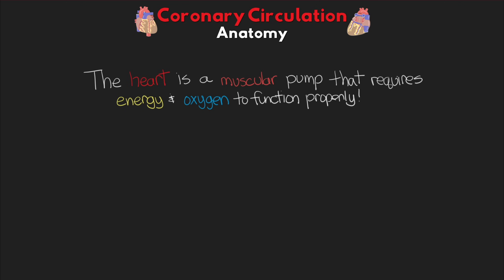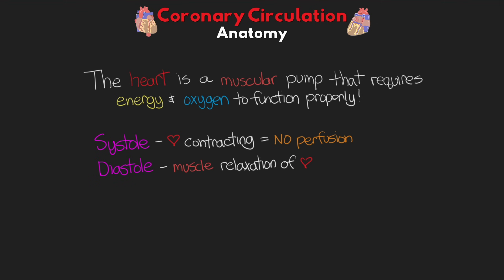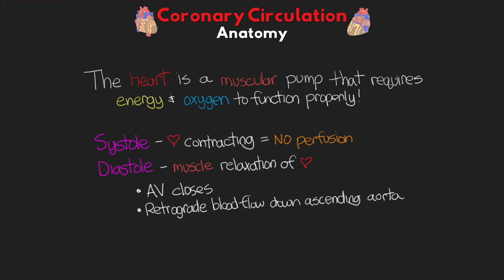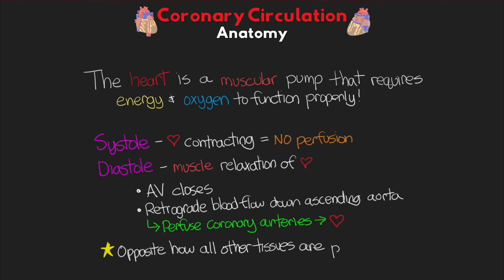There are two primary stages in our cardiac cycle. We have systole, which is where the heart is contracting, and due to this muscle contraction, there's actually no perfusion taking place to the heart during this phase. In diastole, we have muscle relaxation of the heart. The aortic valve closes, and then we have retrograde flow of blood coming back down the ascending aorta. That's stopped by the closed aortic valve, but then it perfuses into the coronary arteries, going on to perfuse the heart. This is important because it is actually opposite of how all other tissues in our body are perfused — they're normally perfused during systole, whereas the heart can only be perfused when it's relaxed, during diastole.